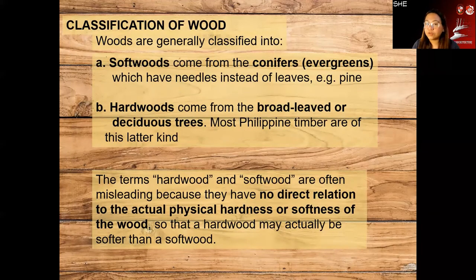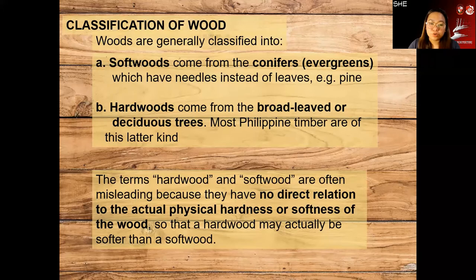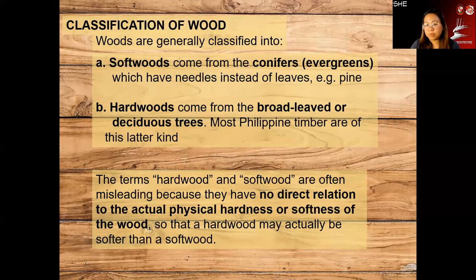Woods are generally classified into two types. We have softwood, which comes from conifers or evergreens like pine trees with pointed leaves. Then we have hardwood, which comes from broad-leaved or deciduous trees very common in the Philippines. The terms hardwood and softwood don't mean the wood is hard or soft — they're often misleading because they have no direct relation to the actual physical hardness or softness of the wood.